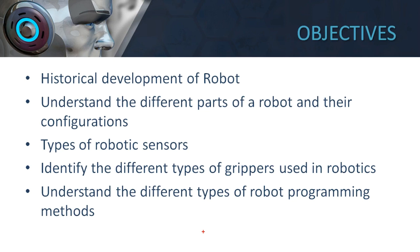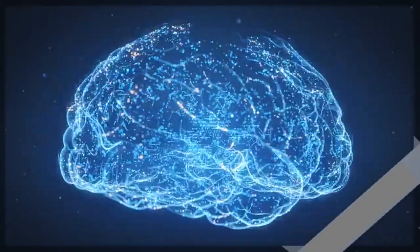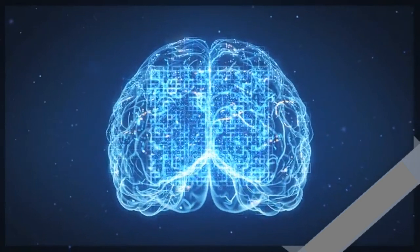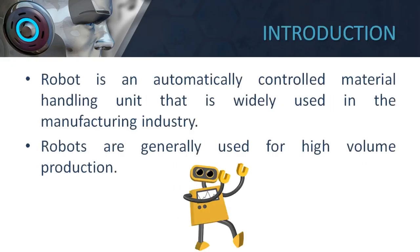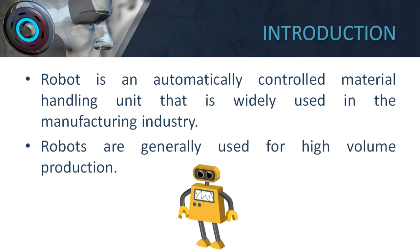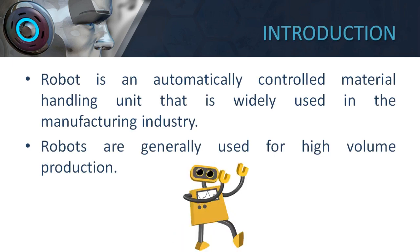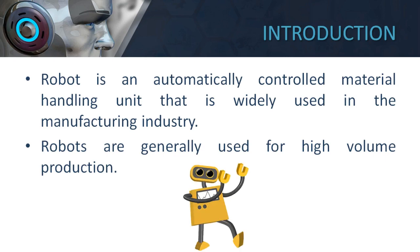The introduction to the robot talks about a robot being used in a manufacturing industry. Robots are used in many domains — for domestic purposes and different applications — but we are confining ourselves to understanding the robot in the context of the manufacturing industry.